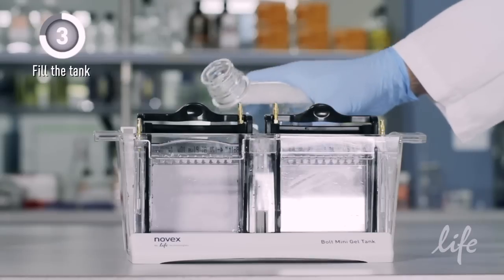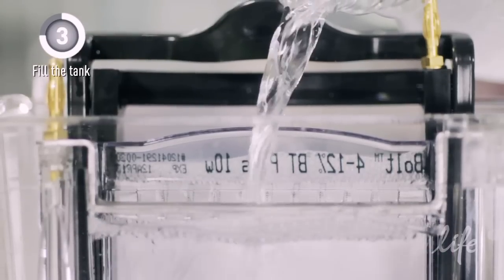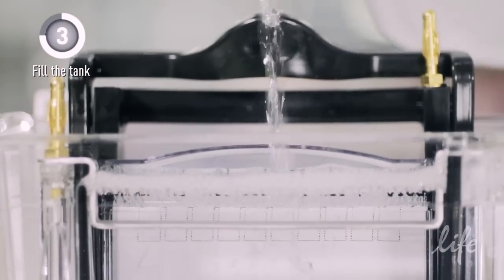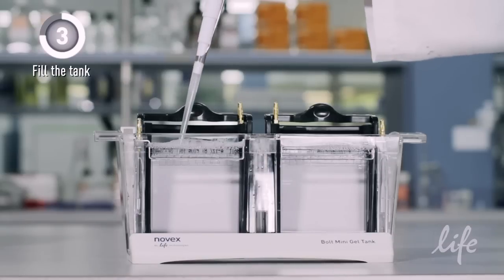Next, fill the electrophoresis tank with 1x Bolt SDS running buffer so that the level is above the electrode but not over the top of the cassette. Rinse the cassette wells with the running buffer.